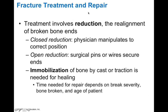In terms of treatment of bone fracture, the goal is reducing movement and realigning the broken ends. A closed reduction is where the physician manipulates the bone into the correct position. An open reduction is where surgical pins or wires are used to secure the ends of those bones.